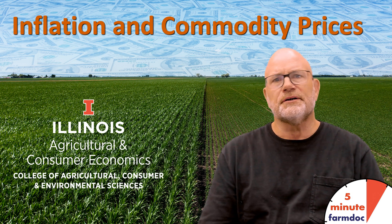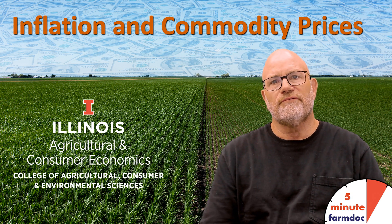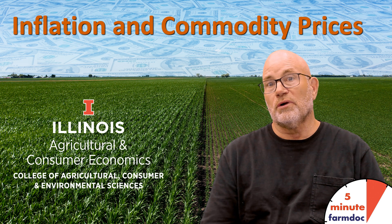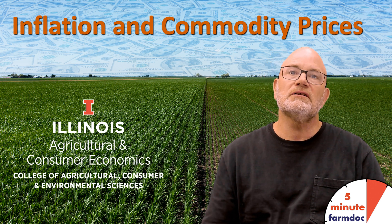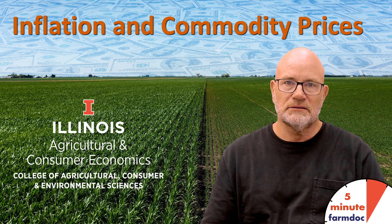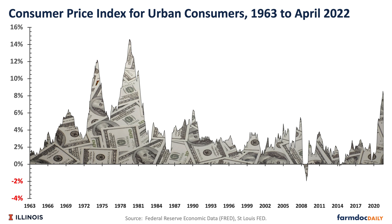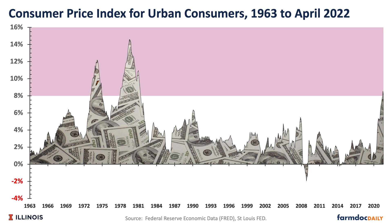Hello, this is Gary Schnitke, and this is a 5-Minute Farm Doc Daily dealing with the relationship between inflation and commodity prices. Inflation has increased in 2022, and in March, April, and May we have seen inflation above 8%. In May, we had an inflation rate of 8.5%. This is the first time that inflation has exceeded 8% since going back into the 1980s.